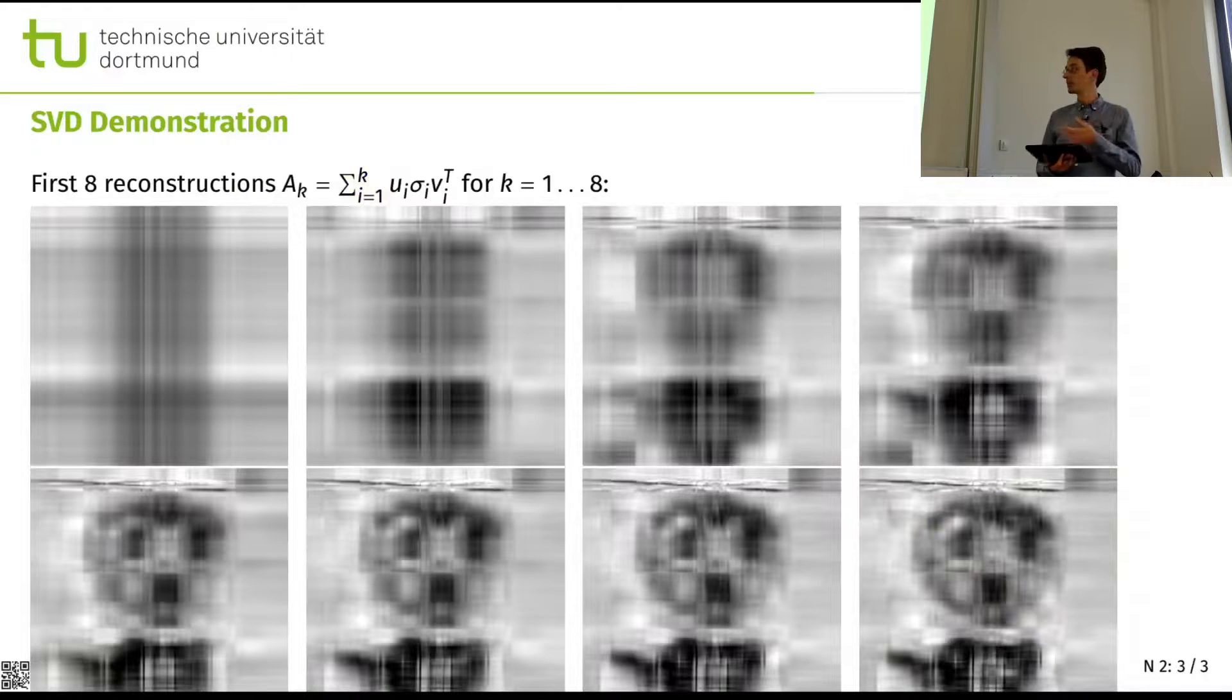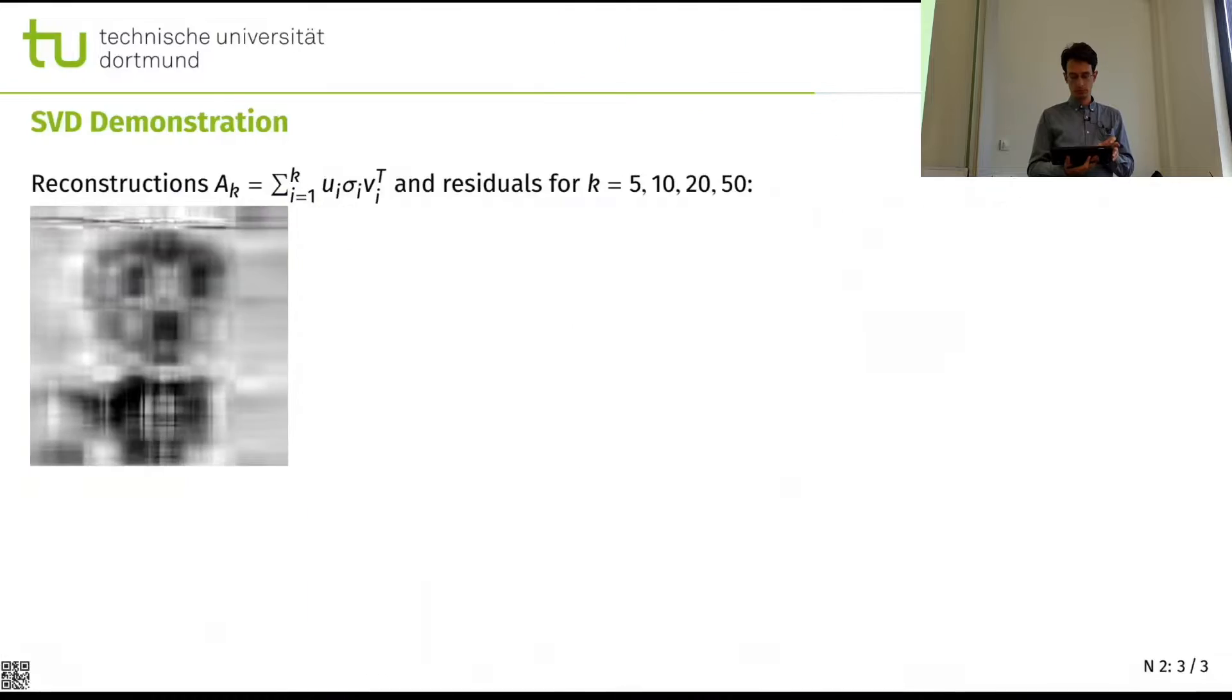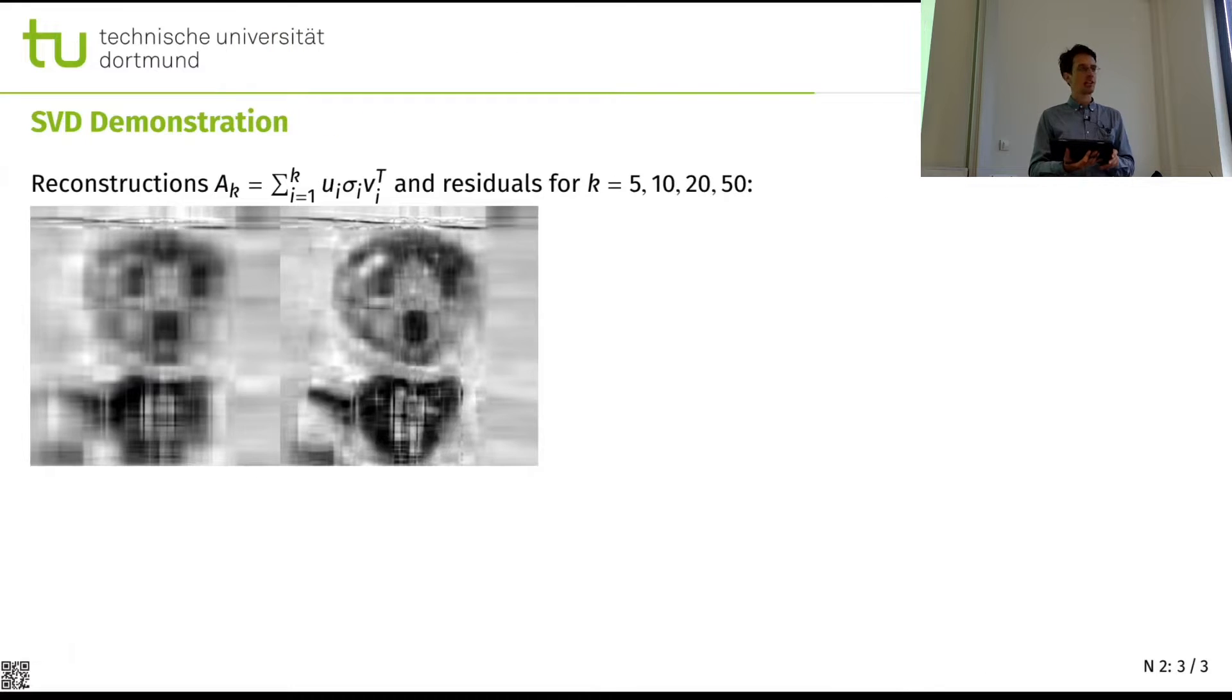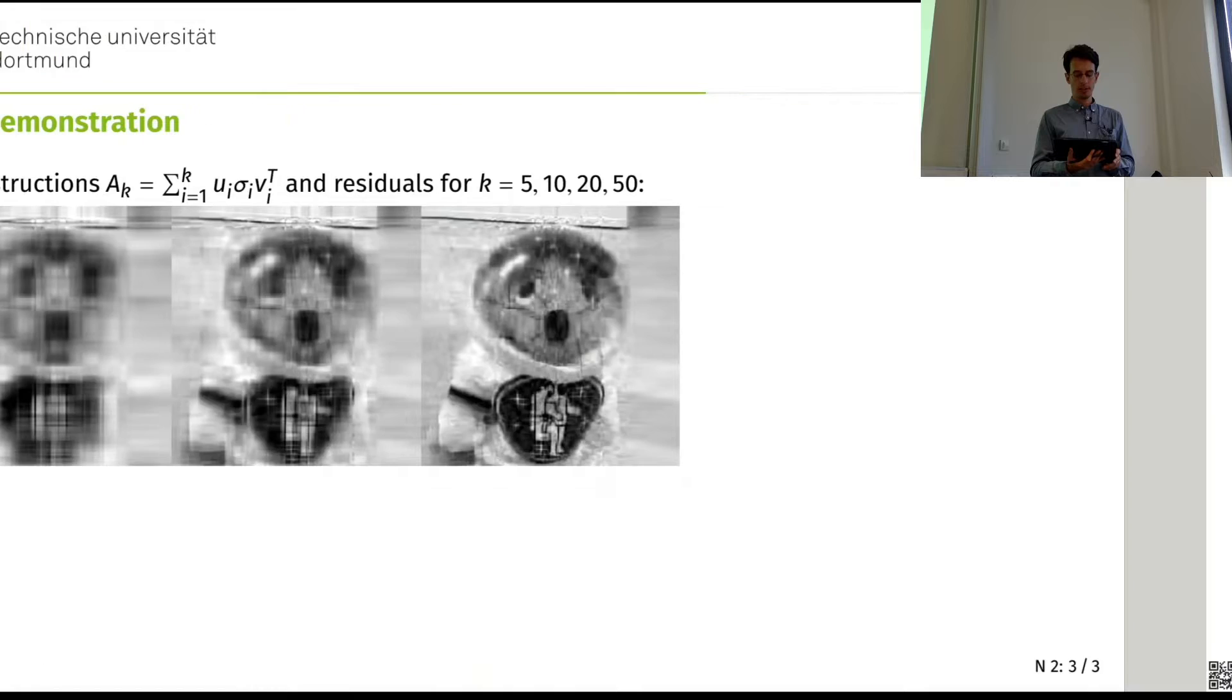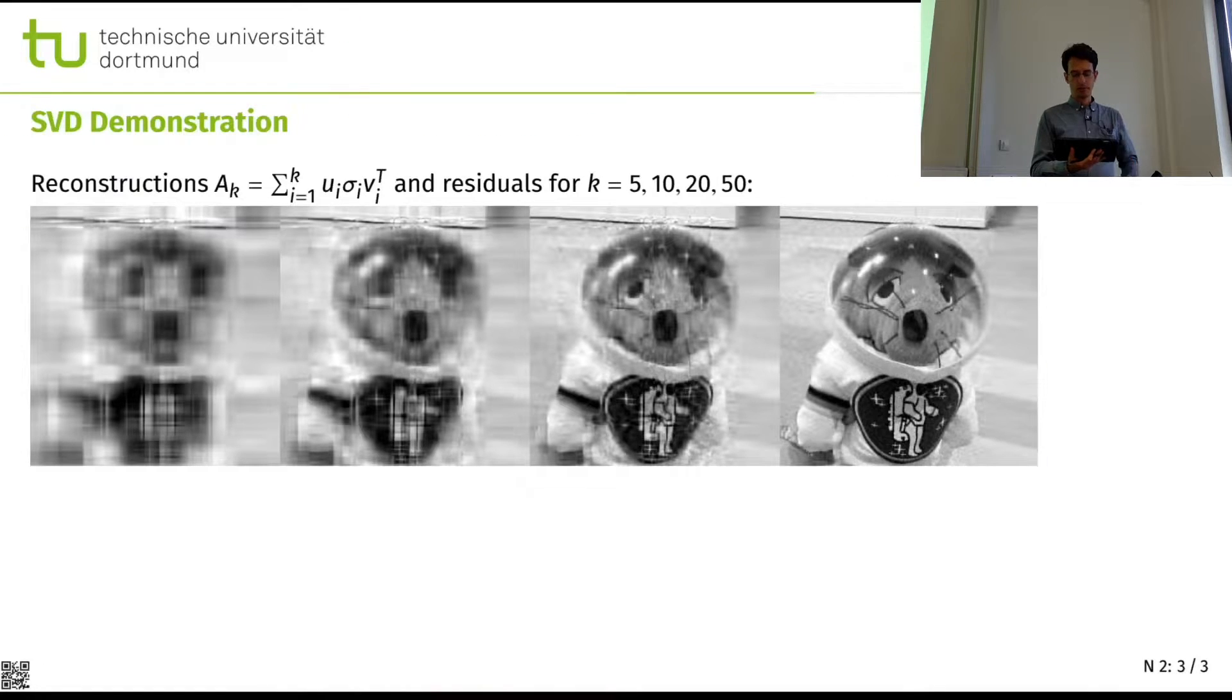And there exists image compression techniques based on this idea. So we can add more components. So yes, I have a higher quality version. That's five components, 10 components, 20, and 50. And you can see that with the 50 components we have very closely the original image.